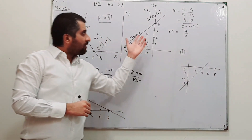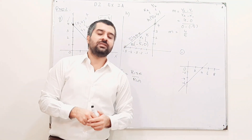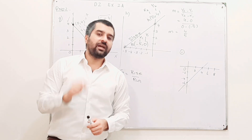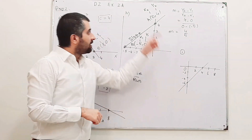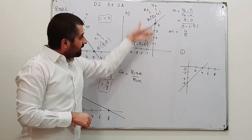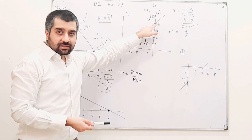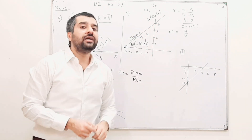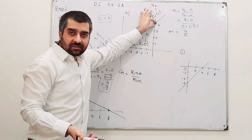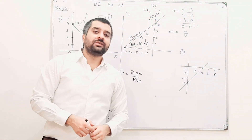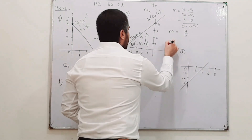Now, what about the y-intercept? The y-intercept is the point where the line is intersecting the y-axis. This line is intersecting the y-axis at this point, and the value of y is 4. So the y-intercept, represented by c, is 4. So c = 4.